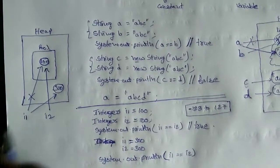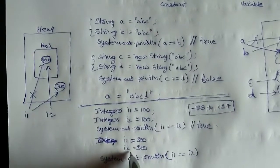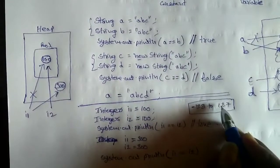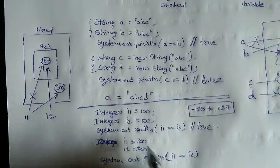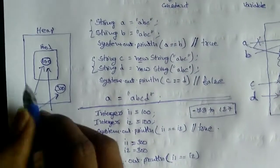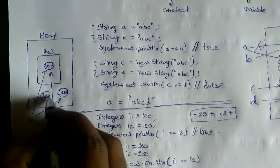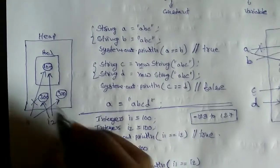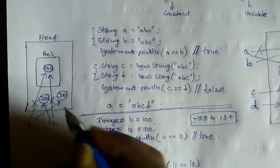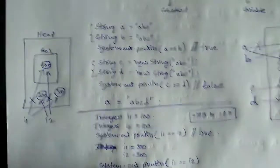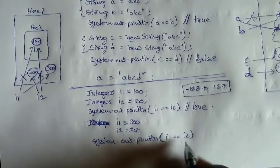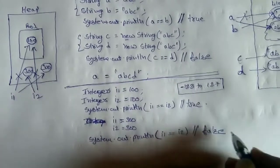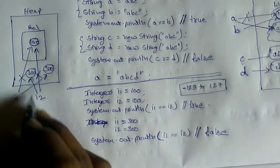Now, i2 equal to 300 — it is out of this range, so it won't go to the pool. It will create a new 300 somewhere in the heap, and i2 points to this new 300. If you now compare i1 and i2, it obviously returns false because they both are pointing to different objects.